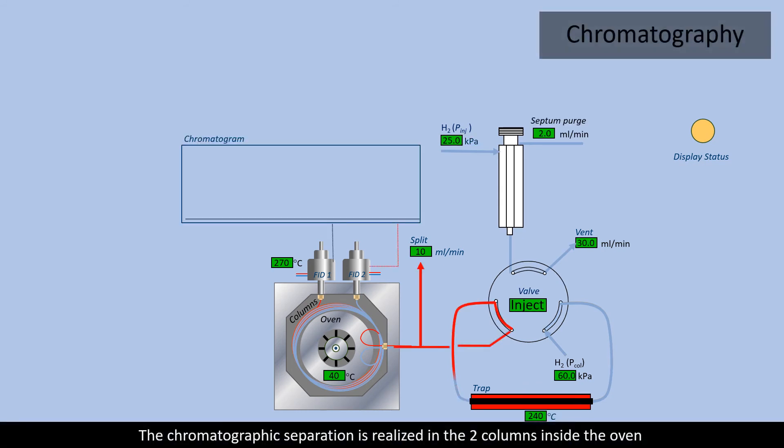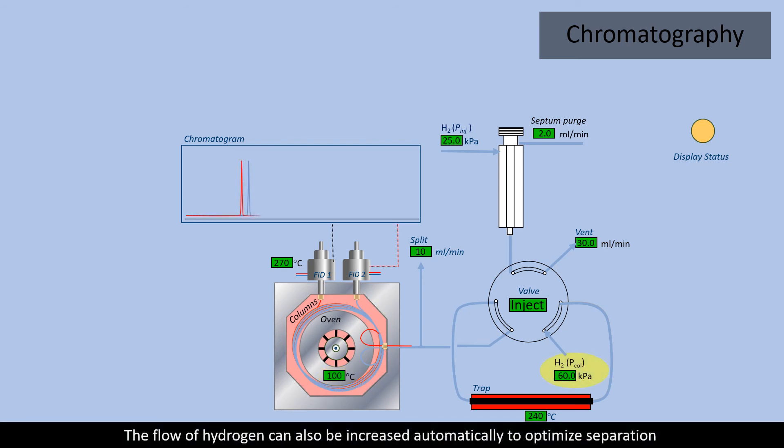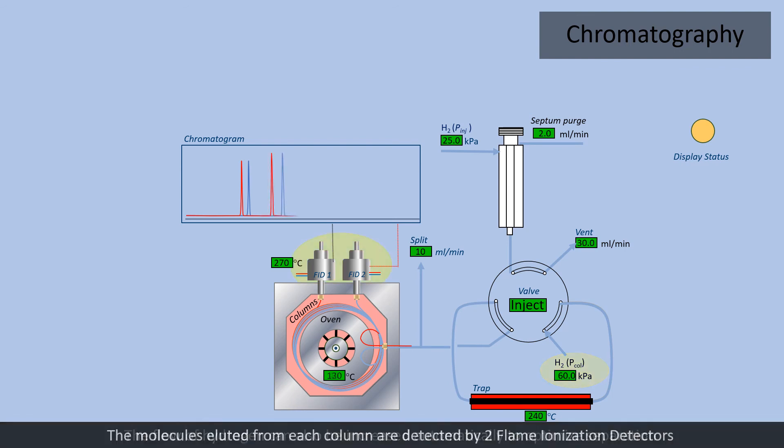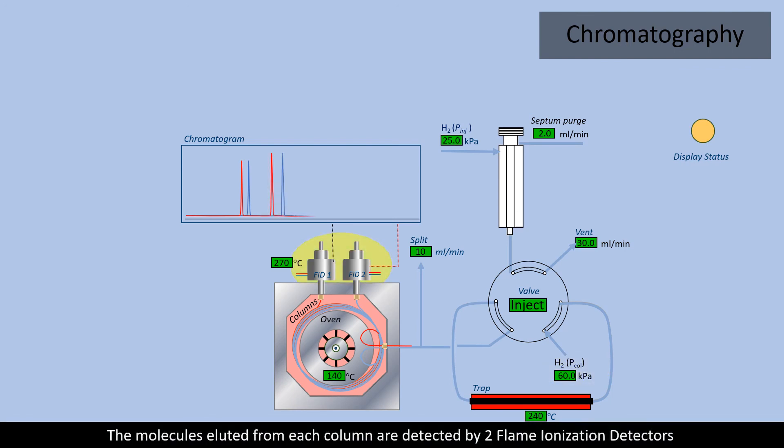The chromatographic separation is realized in the two columns inside the oven. The temperature of the oven is controlled by a precise program. The flow of hydrogen can also be increased automatically to optimize separation. The molecules eluted from each column are detected by two flame ionization detectors.